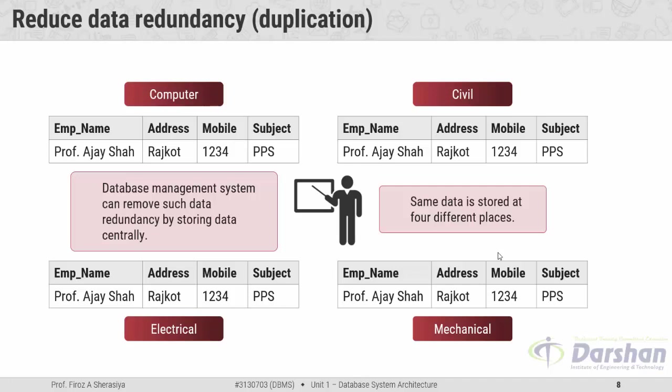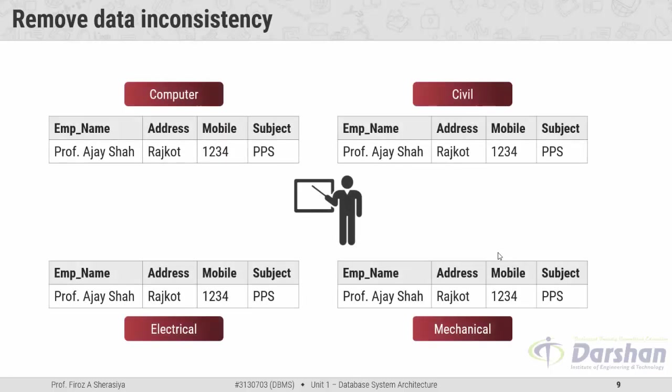Next, the second advantage: it removes data inconsistency. Data inconsistency is directly proportional to data redundancy. Let us see an example of how a database management system will reduce or remove data inconsistency. In the previous example, suppose this faculty's mobile number is changed.